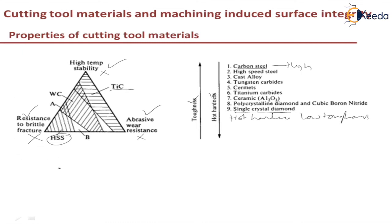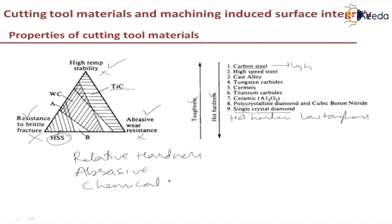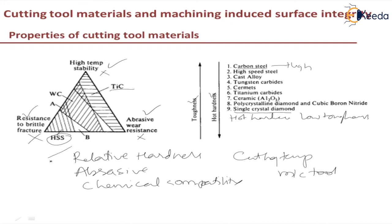There are many factors which influence the performance of cutting tools. These include relative hardness between the cutting tool and the work material, abrasive particles such as scale on the surface of the workpiece, chemical compatibility between the work material and the cutting tool, cutting temperatures at which the cutting is happening, and the conditions and rigidity of the machine tool. These are all factors which influence the cutting process. This was about properties of cutting tool materials.